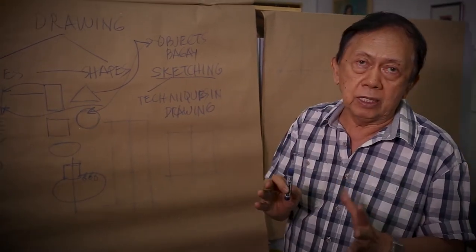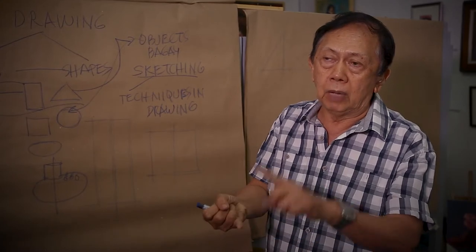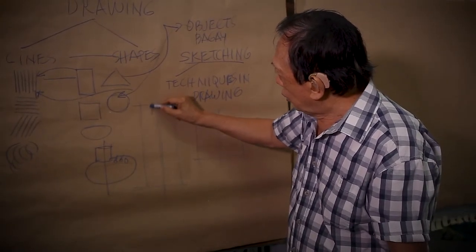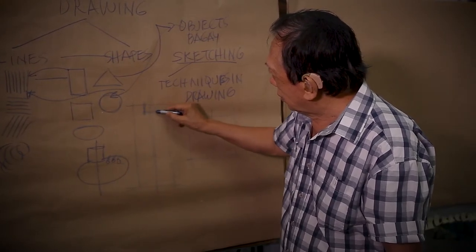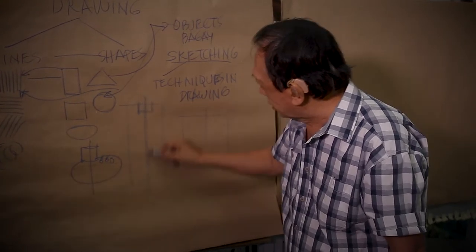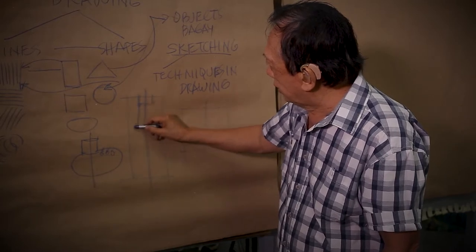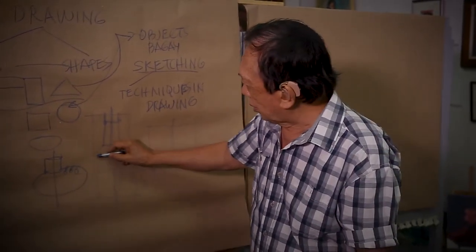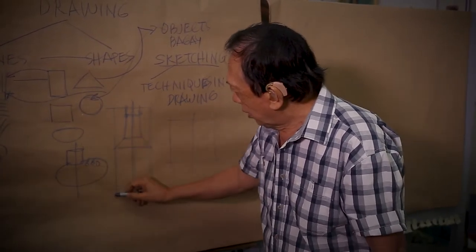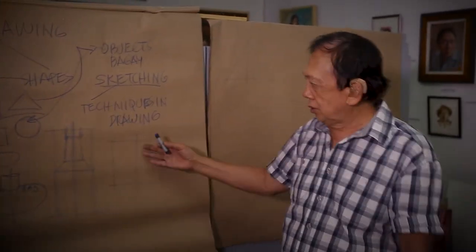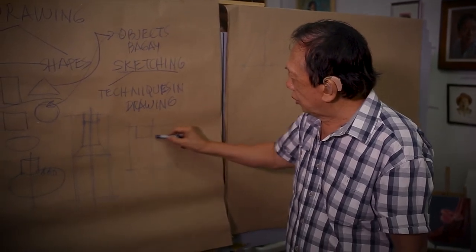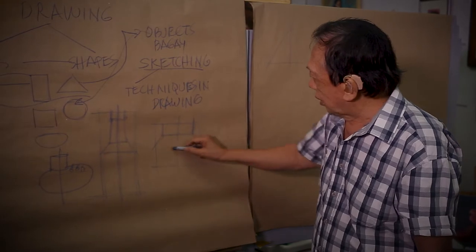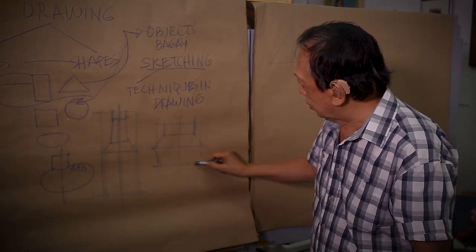Yung pangatlong step - apat ang step niyan. Una: draw the shape of the object. Pangalawa: draw one vertical line on the middle. Pangatlo: draw the shape of every part of the object. Halimbawa, yung ulo ng bote - rectangle. Drawing mo yung rectangle, ilalagay mo dyan sa gitna. Yung leeg - the neck - rectangular shape. Ilalagay mo sa gitna. Halimbawa yung pinakagitna niyan - triangular shape. So drawing ng triangle. Dito naman sa may iba pa - rectangle.